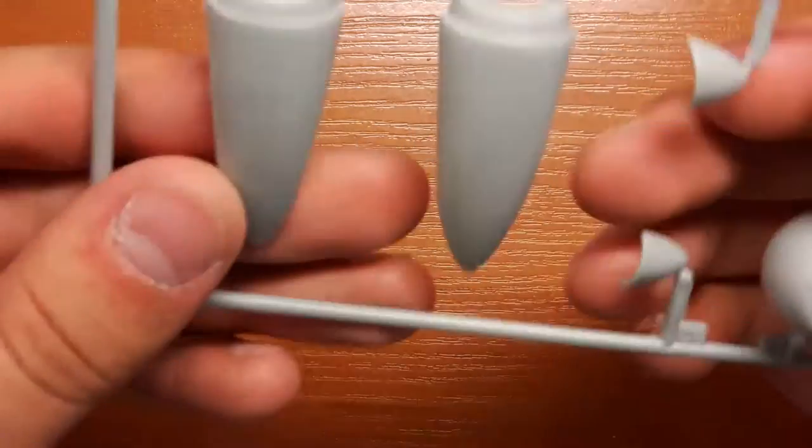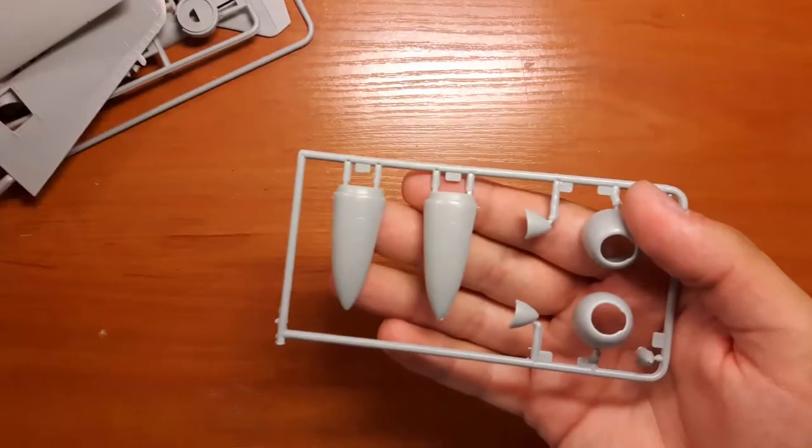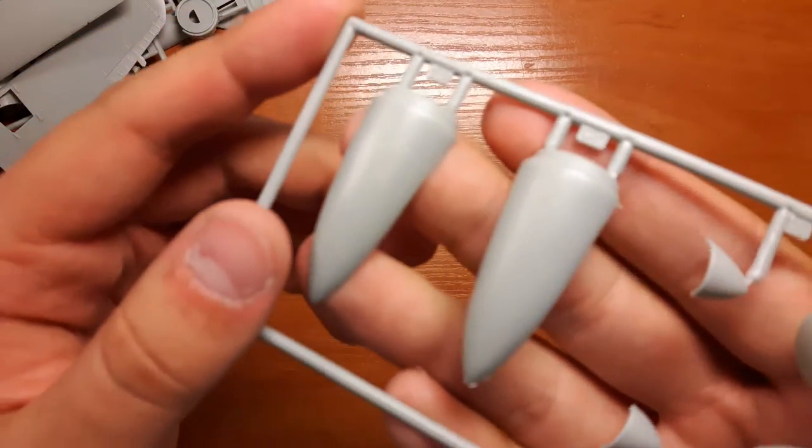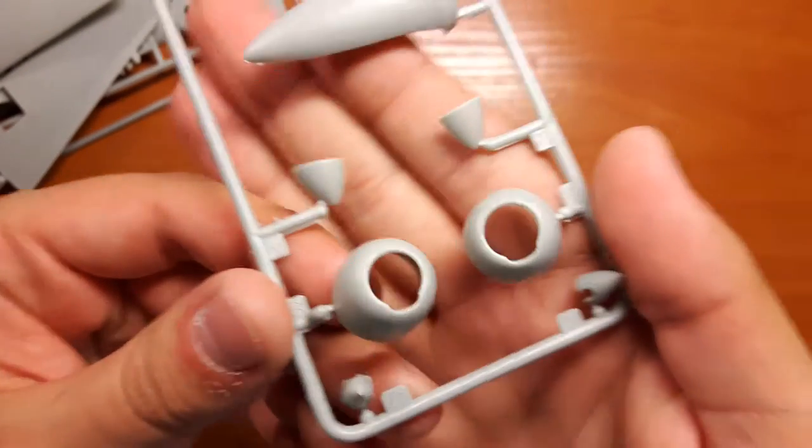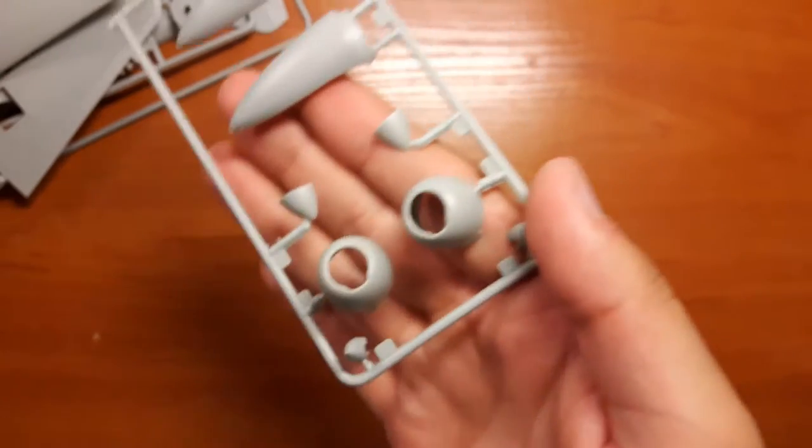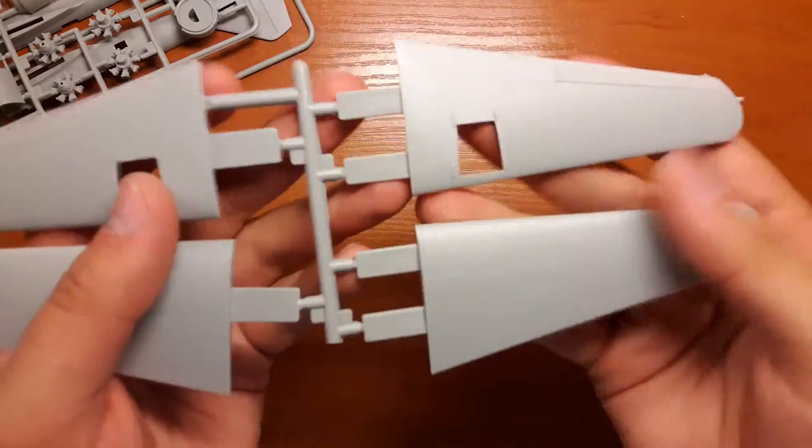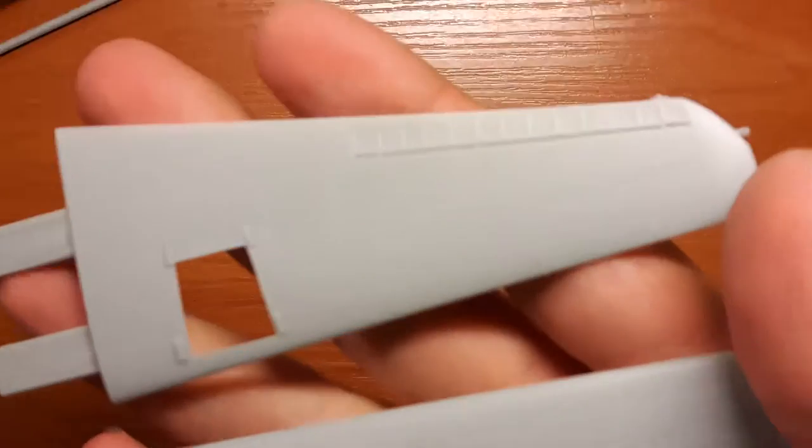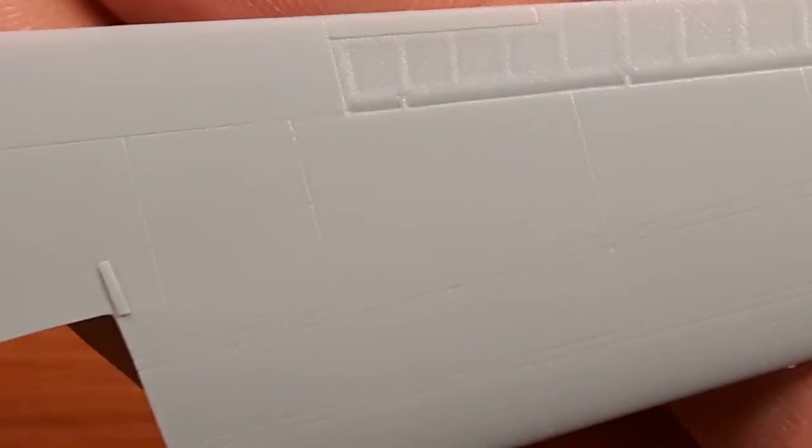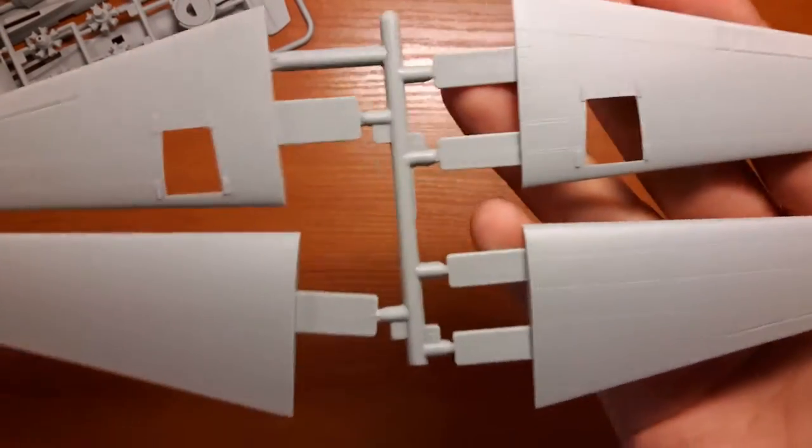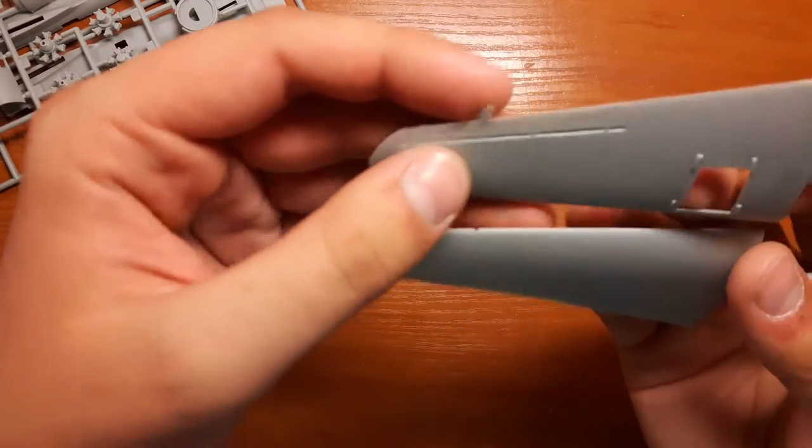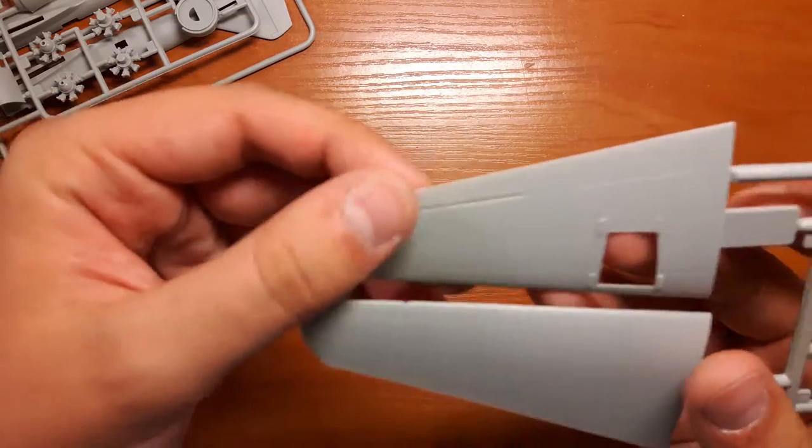And the nose part, I suppose cowlings, pretty nice. Recessed panel lines, nothing is raised here. Nose bits and the propeller nose bits. Wings again, pretty nicely scribed, everything really thin and nice. Right here you can see them. Alright, a bit of flash here, but you know, still extra free plastic for you.